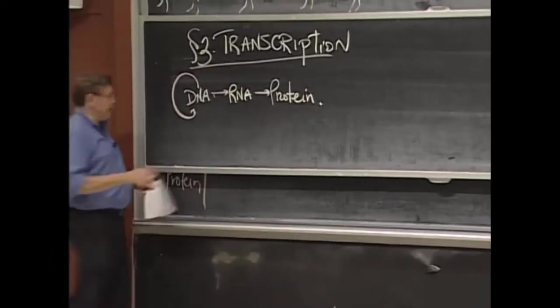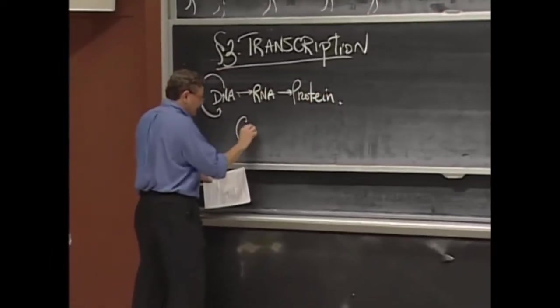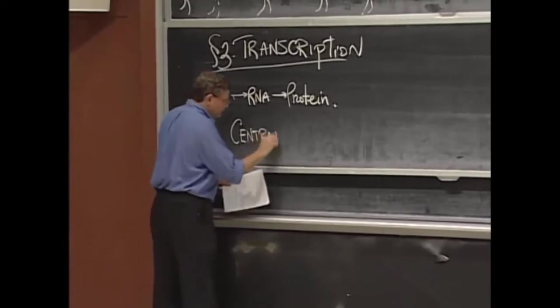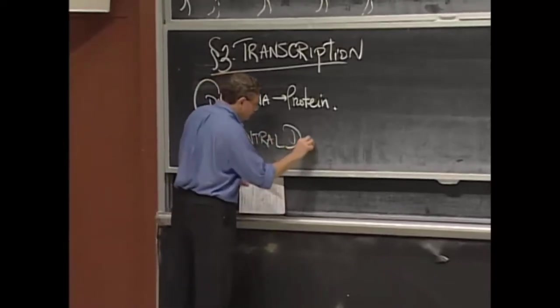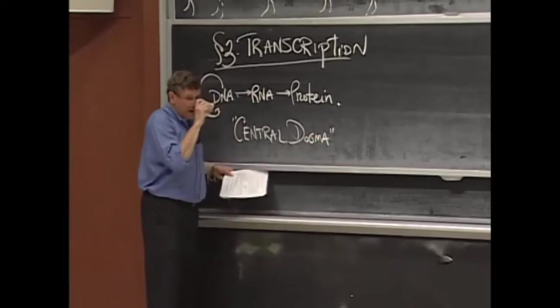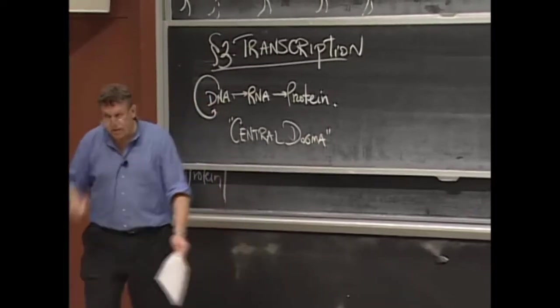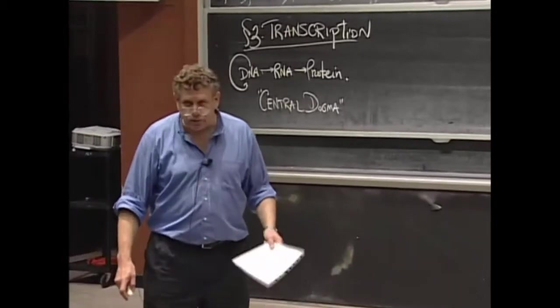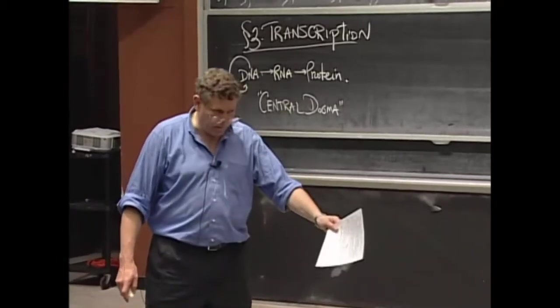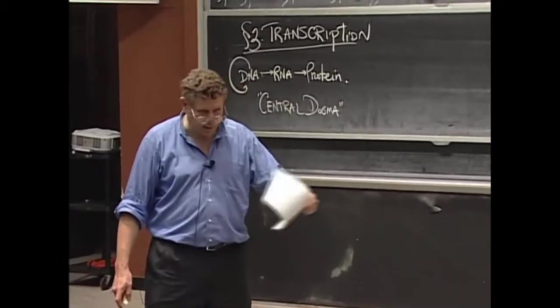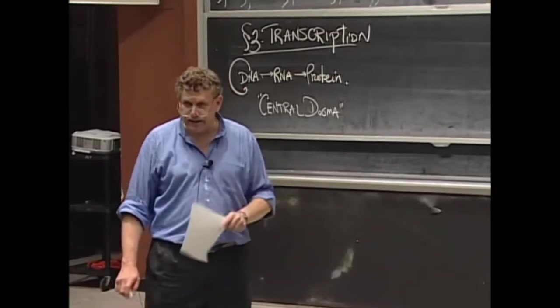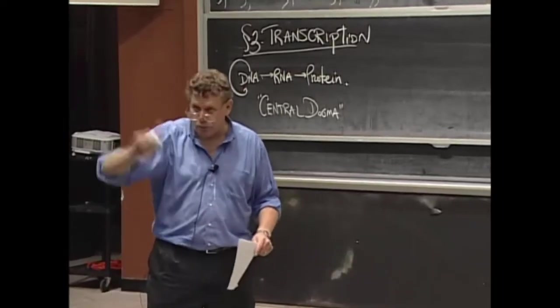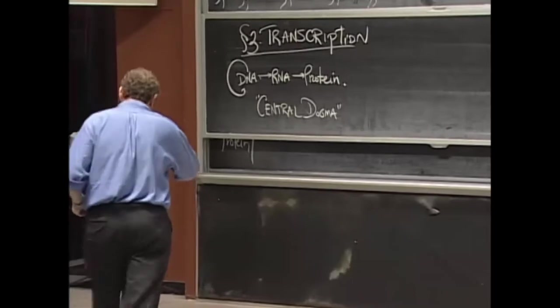This, by the way, gets the name the central dogma of molecular biology. So, due to Francis Crick, and as an aside, Francis actually never said DNA goes to RNA goes to protein. What he said was nucleic acids go to protein. The information flows from nucleic acids to proteins. He never actually said DNA goes to RNA goes to protein, and that's an important point we'll come to at some point, probably next time.